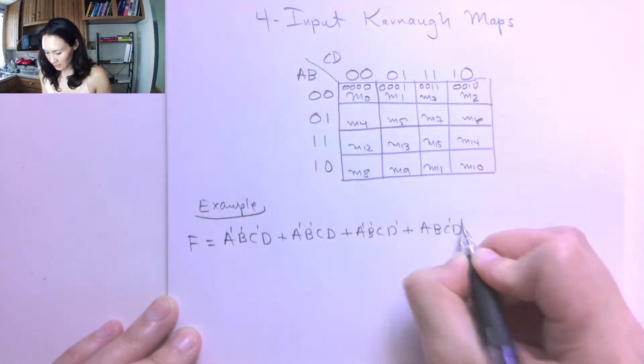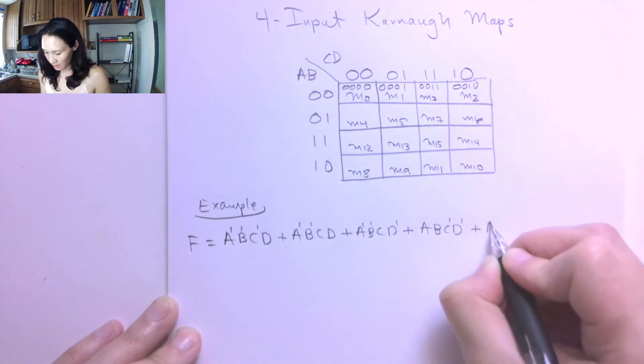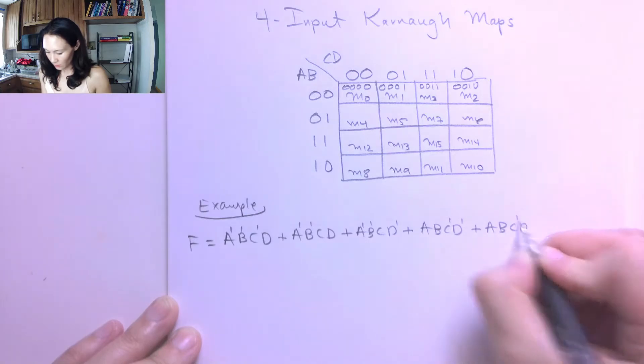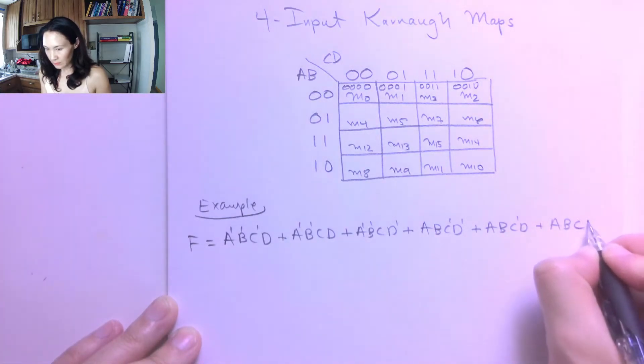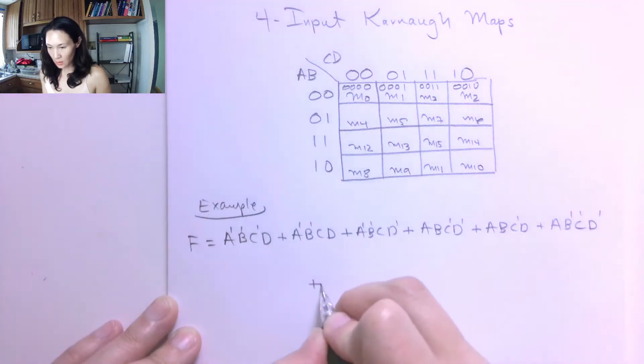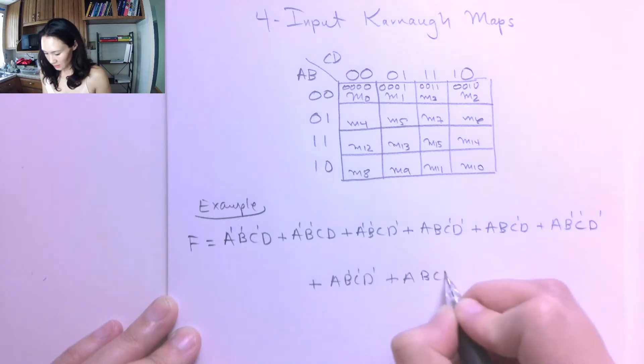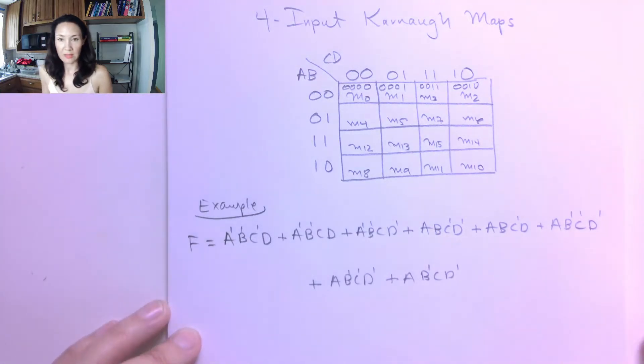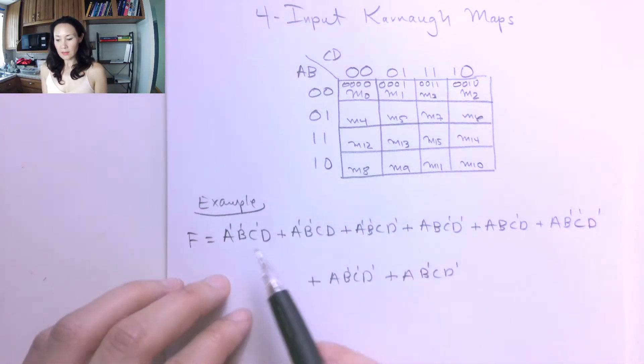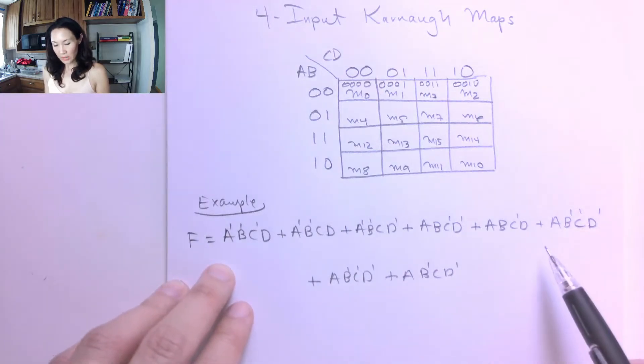or A, B, C, D where C and D are complemented, or A, B, C, D where B, C, D are complemented, or A, B, C, D where B and D are complemented. Okay, great. So these are a sum of product terms.